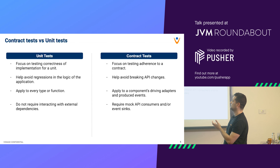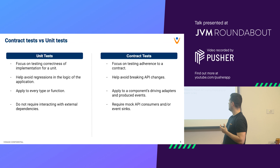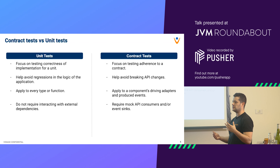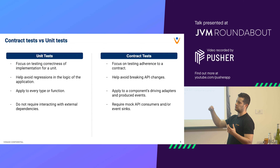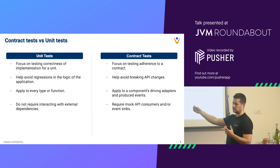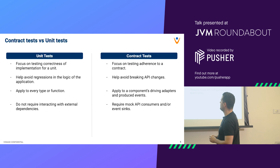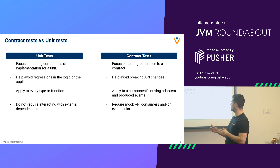Unit tests apply to every type of function — classes and methods in Java, it doesn't matter. Contract tests only apply to driving adapters, meaning your inbound ports. If you have a web server, that's an entry point to your application — external consumers consume your API through that entry point, and each entry point will have its own contract test. Unit tests should not require external dependencies, while contract tests do require mock API consumers or event syncs.